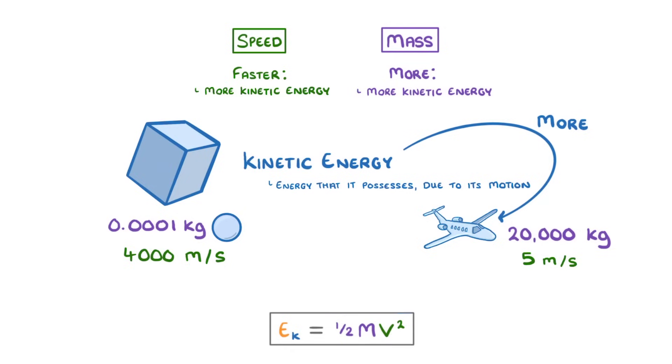For the plane, we do 1 half, or 0.5, times its mass of 20,000 kilos, times its speed of 5 squared. And remember that it's only the speed that's being squared, not the entire thing. So that gives us 250,000, which will be in joules, because we measure energy in joules. And we could rewrite it as 250 kilojoules, as the k just means 1,000.